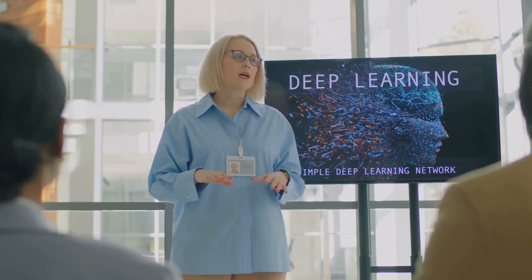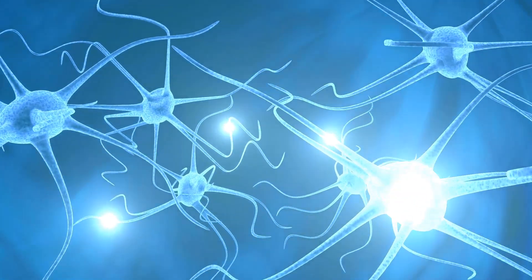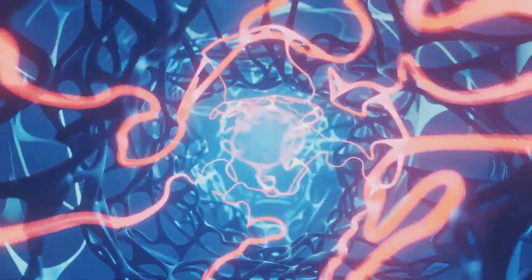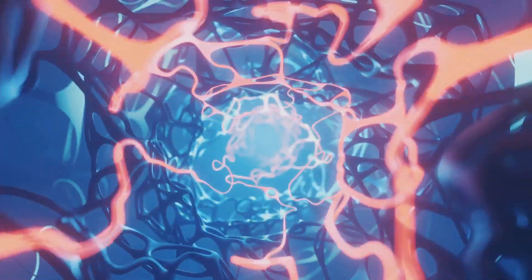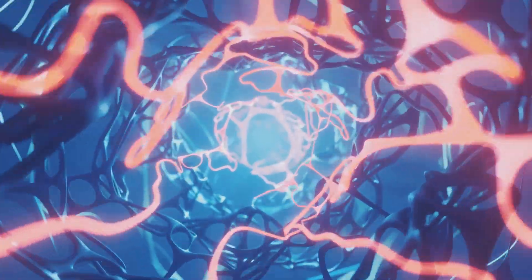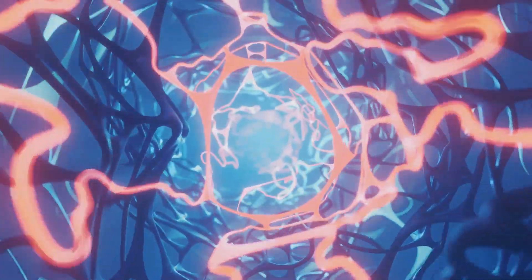Unlike traditional neurons, recurrent neurons possess a memory mechanism. They can retain information from previous inputs, making them ideal for processing sequential data like text, speech, and time series. These neurons have connections that loop back onto themselves, allowing them to maintain a hidden state that captures the context of the input sequence.